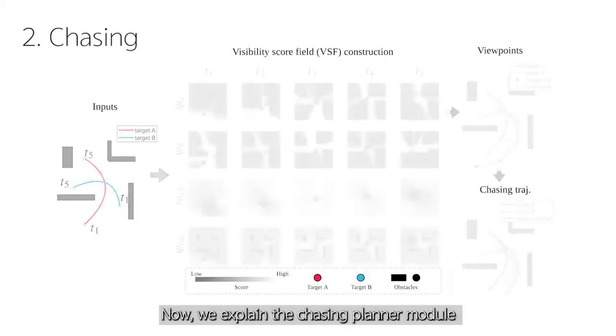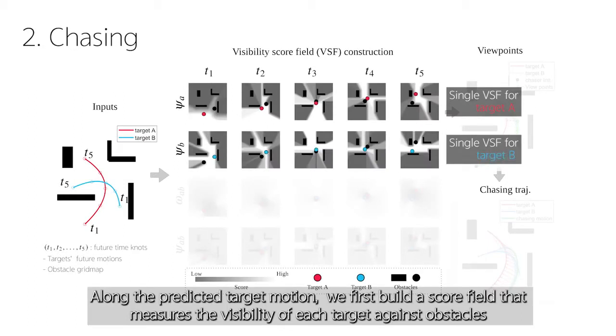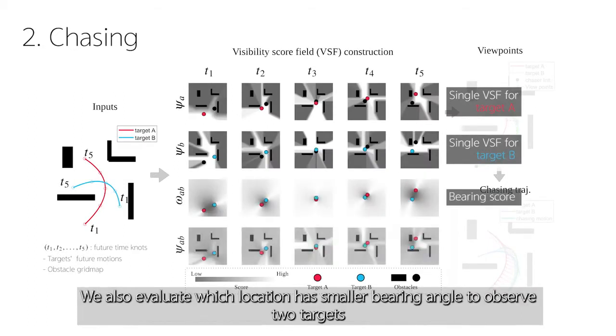Now, we explain the chasing planner module. Along the predicted target motion, we first build a score field that measures the visibility of each target against obstacles. We also evaluate which location has a smaller bearing angle to observe two targets.